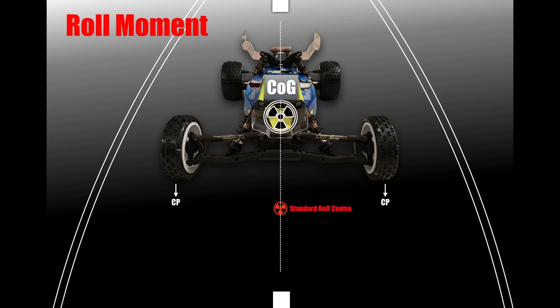All cars have different centres of gravities. You can actually change the centre of gravity with certain things — placement of things in the car and other ingredients. There's actually a way of finding out what the centre of gravity of your car is, and maybe I'll do a video on that as well. But the roll centre is acting upon the centre of gravity.